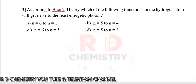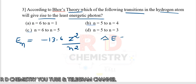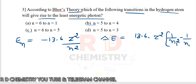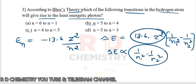Question number 3. According to Bohr's theory, which of the following transitions in the hydrogen atom will give rise to the least energetic photon? Energy is given by Eₙ = −13.6 × Z²/N². The energy difference between two shells is ΔE = 13.6 × Z² × (1/N₁² − 1/N₂²). Since 13.6Z² is constant, ΔE is directly proportional to (1/N₁² − 1/N₂²). If this value is least, that transition gives the least energetic photon.